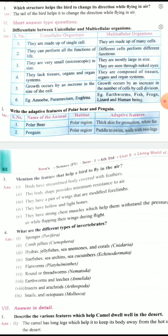Fourth point: They lack tissues, organs and organ systems. Here they are composed of tissues, organs and organ systems. Fifth one: Growth occurs by an increase in the size of the cell. Growth occurs by an increase in number of cells by cell divisions. Sixth one: Amoeba, paramecium, euglena. This is the example for the unicellular organisms. Multicellular organisms examples are earthworms, fish, frogs, lizard and human beings.